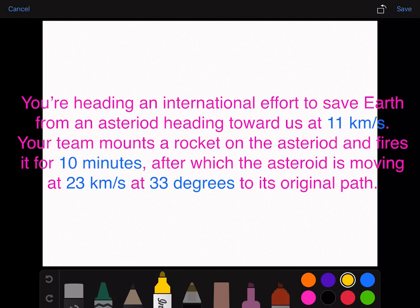You are heading an international effort to save Earth from an asteroid heading toward us at 11 km per second. Your team mounts a rocket on the asteroid and fires it for 10 minutes, after which the asteroid is moving at 23 km per second at 33 degrees to its original path.